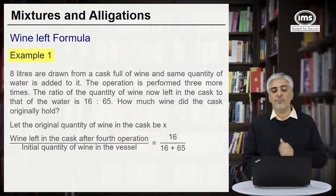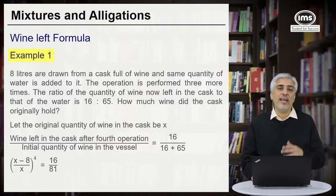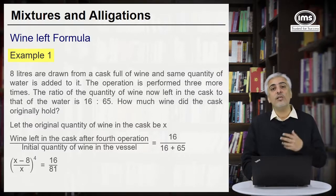So 16 upon 16 plus 65. Taking the equation putting x the value of wine originally. So we will have (x minus 8) upon x the whole raised to 4 becomes 16 upon 81.